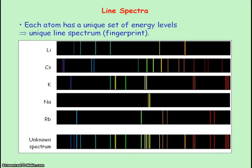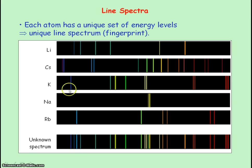Each atom has its own unique set of energy levels and so produces its own unique line spectrum. The line spectrum acts like a fingerprint to identify which atom produced it. If you have an unknown spectrum and want to find out which atoms created it, you compare the spectral lines with those of known atoms. In this case, by comparing the lines, we can see the spectrum is made from lithium, potassium, and rubidium.